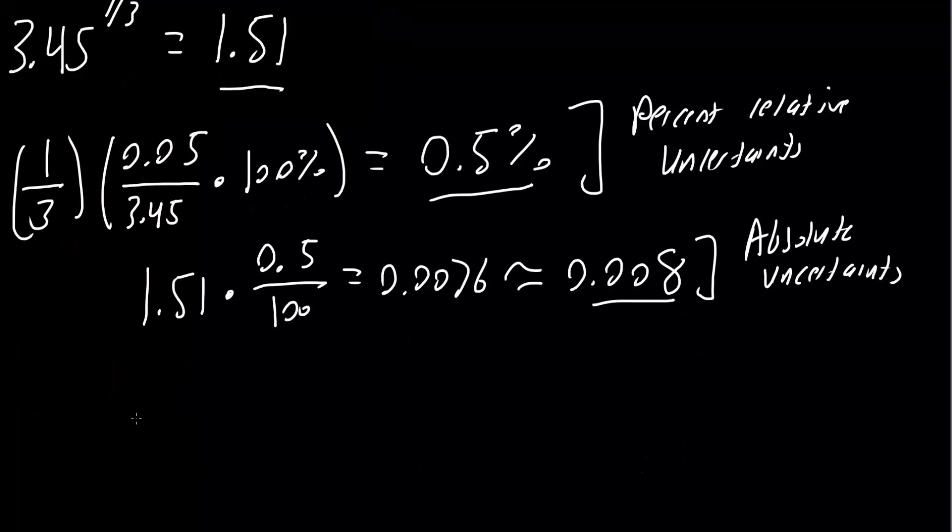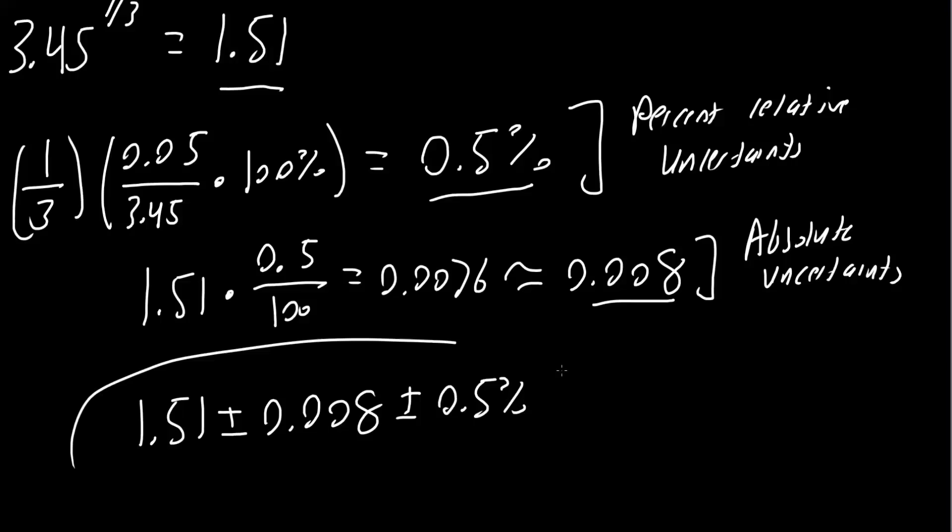And just to clear it up, 1.51 is the algebraic answer, plus or minus the absolute uncertainty, which is 0.008, plus or minus the relative percent uncertainty, which was 0.5%. And that's all we need to do for this problem. Thank you.